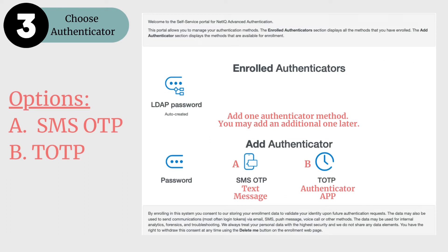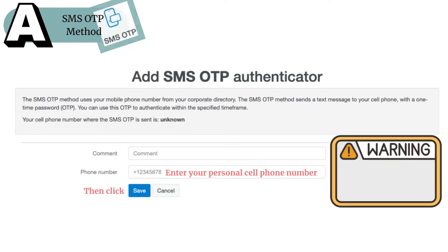This will bring you to Step 3, where it's time to choose an authenticator method. You have two options. Option A is the SMS OTP method, which sends a simple text message to your personal device. Option B is the TOTP method, using an authenticator app for a time-based one-time passcode. Steps for both methods will be shown in this video, so select one for now — you may add an additional one later.